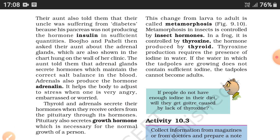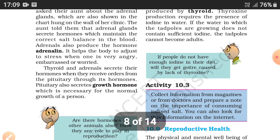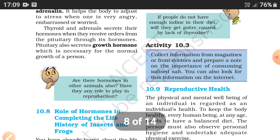The thyroid and adrenal glands secrete their hormones only when they receive an order from the pituitary gland through its hormone. The pituitary also secretes growth hormone, which is necessary for the normal growth of a person.